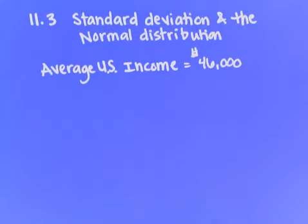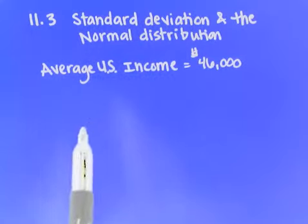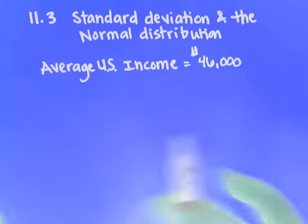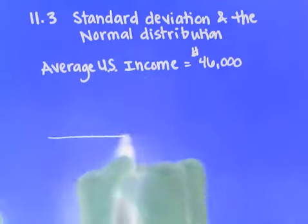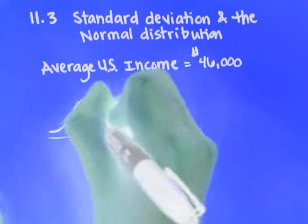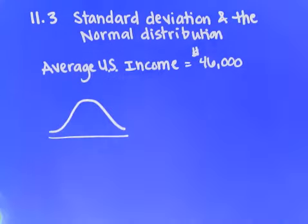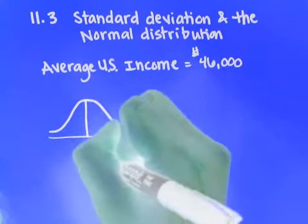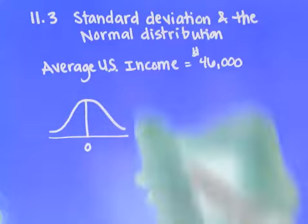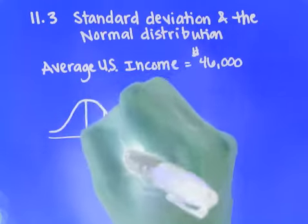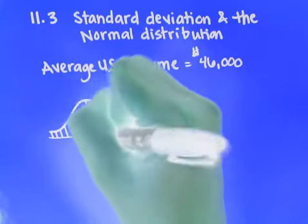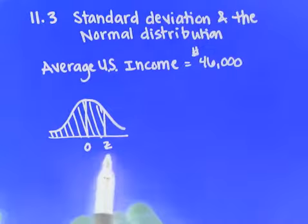Today in class we were looking at the standard deviation and normal distribution for average US income. We were looking at the standard normal curve. The standard normal curve has a mean of zero. And when we look at the z-score, we're looking at the area under the curve to the left of the z-score.